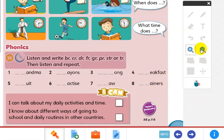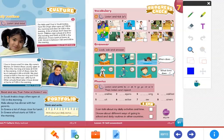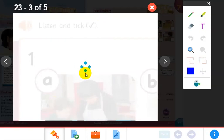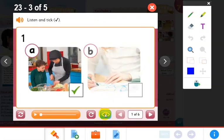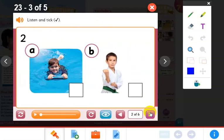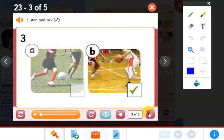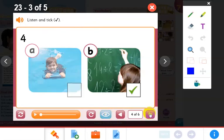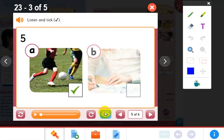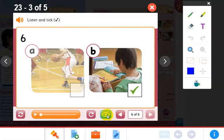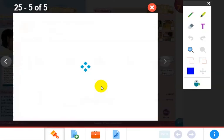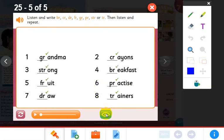It's time now to check your understanding. Check your listening skill. I'm going to show you the answers. That's learn to cook. I have swimming lessons. Practice basketball, that's right. Study math, that's right. Practice playing football. And here we have study English. That's right. This is grandma, crayons, strong, breakfast, fruit, practice, draw, and trainers.